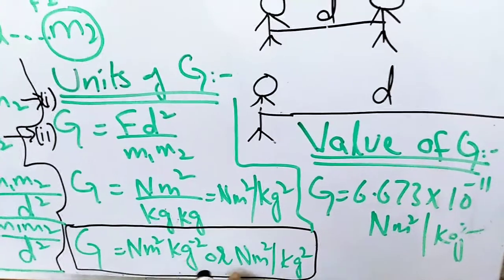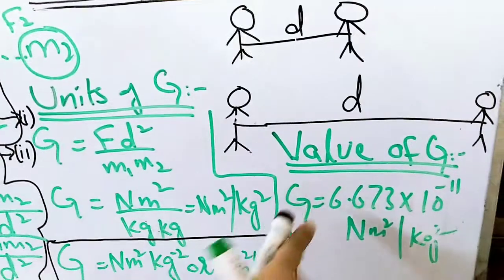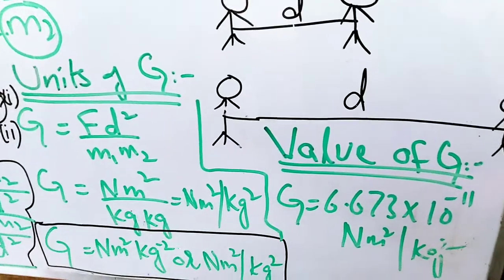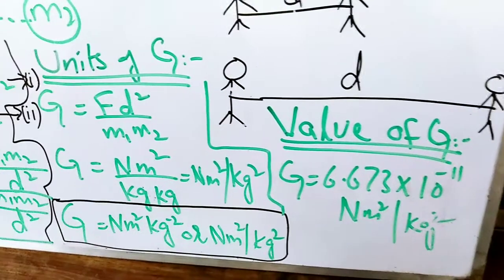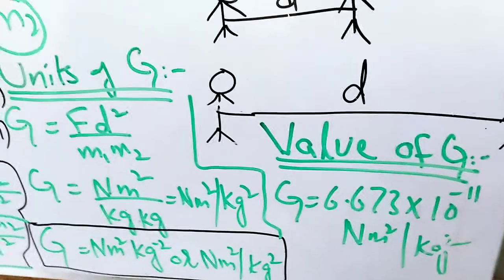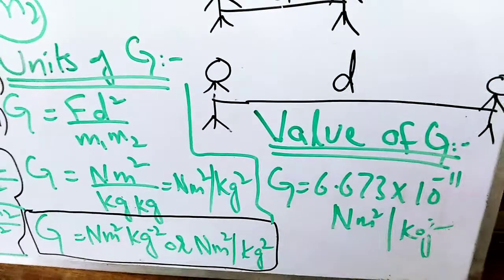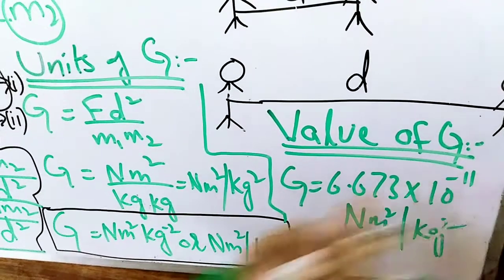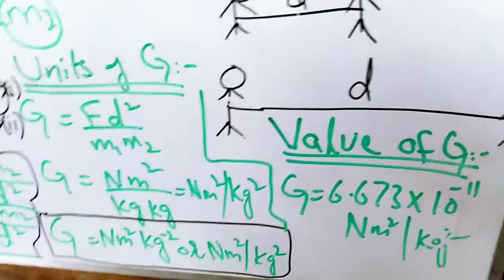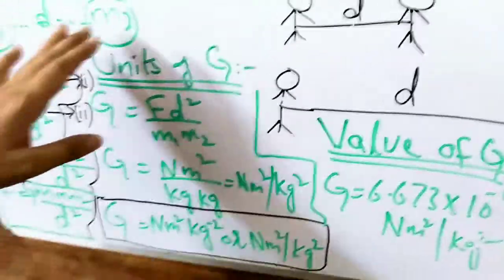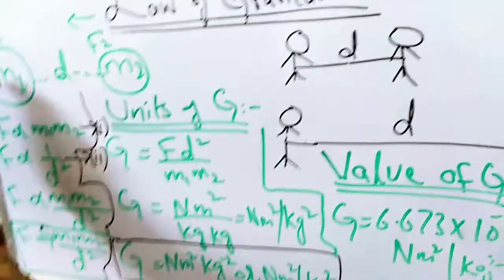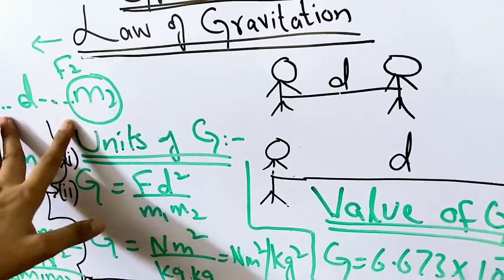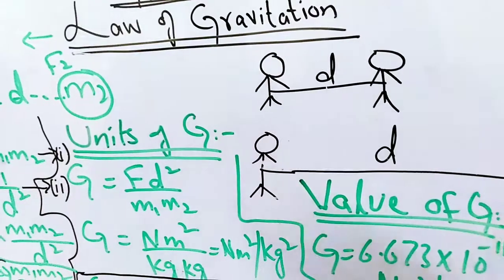The value of G is a constant: 6.673 times 10 raised to minus 11. This value is very small, which is why in our surroundings we cannot feel the attraction between ordinary objects. The value of G remains the same everywhere — it is always 6.673 times 10 to the minus 11 and does not change. Also, this law of gravitation is consistent with Newton's third law of motion: the force M1 exerts on M2 and the force M2 exerts on M1 are equal in magnitude but opposite in direction.